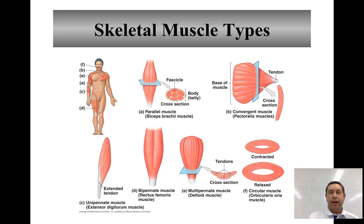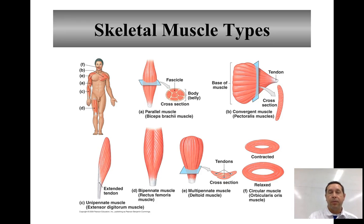Multipennate is where that tendon branches within the muscle, so you have multiple angles because of the branching of that central tendon. The deltoid in the shoulder is an example. Finally, we have circular muscles, or sphincter muscles, where the fibers or fascicles form rings around a central opening. The orbicularis oris muscle around your mouth is an example.